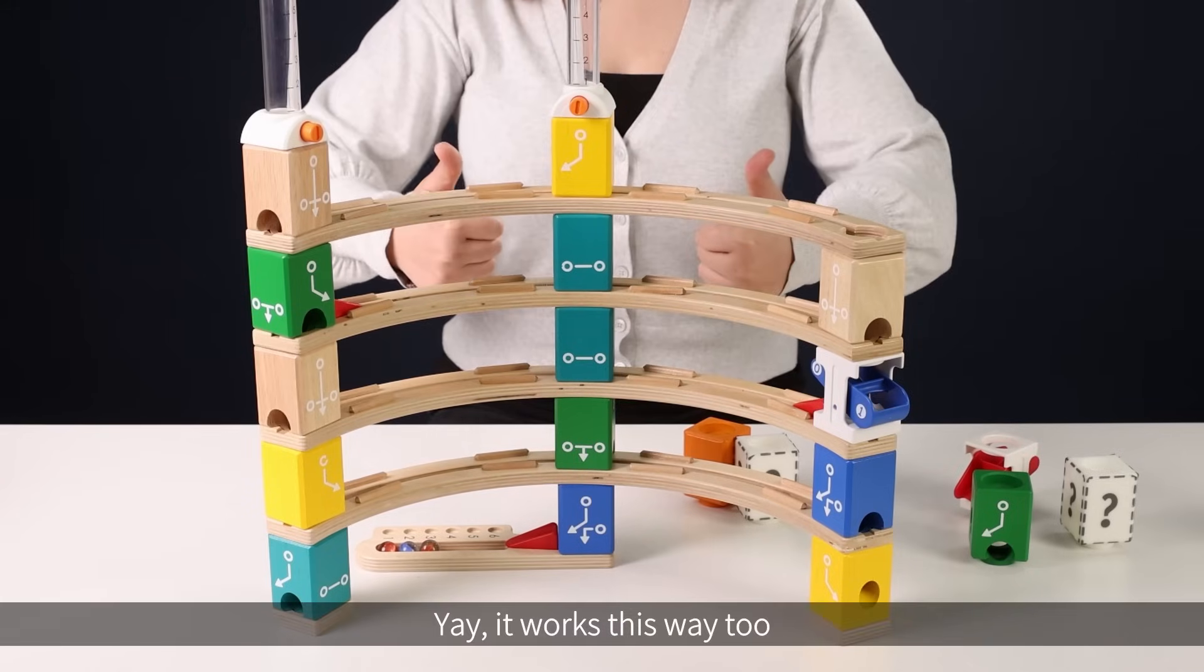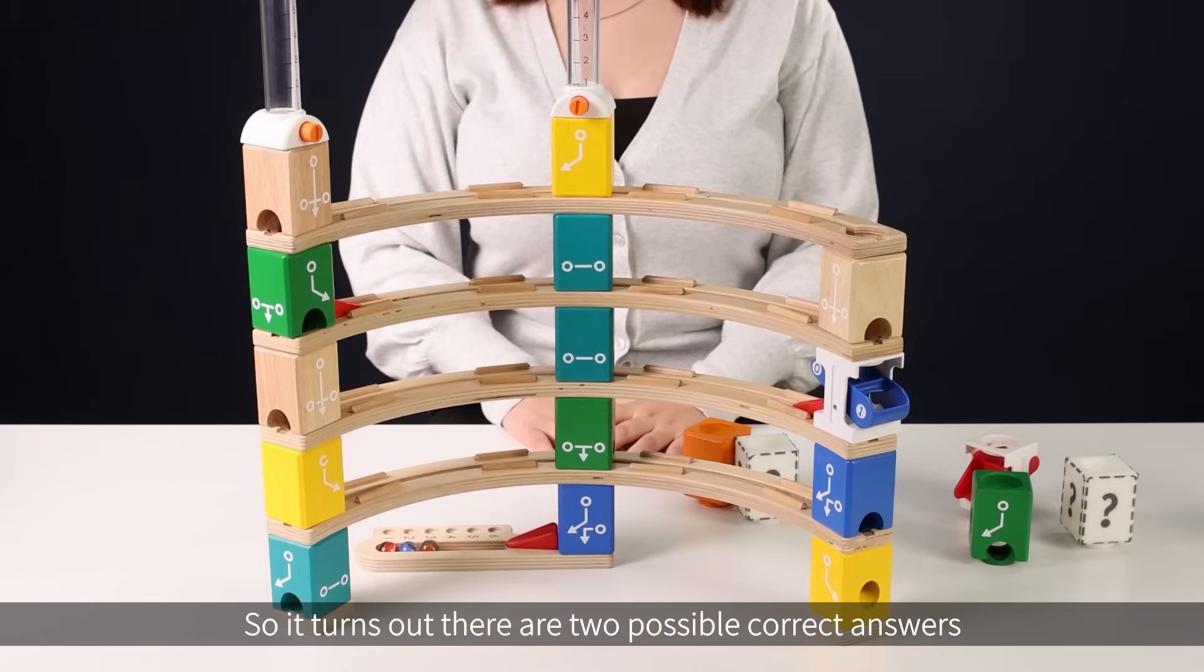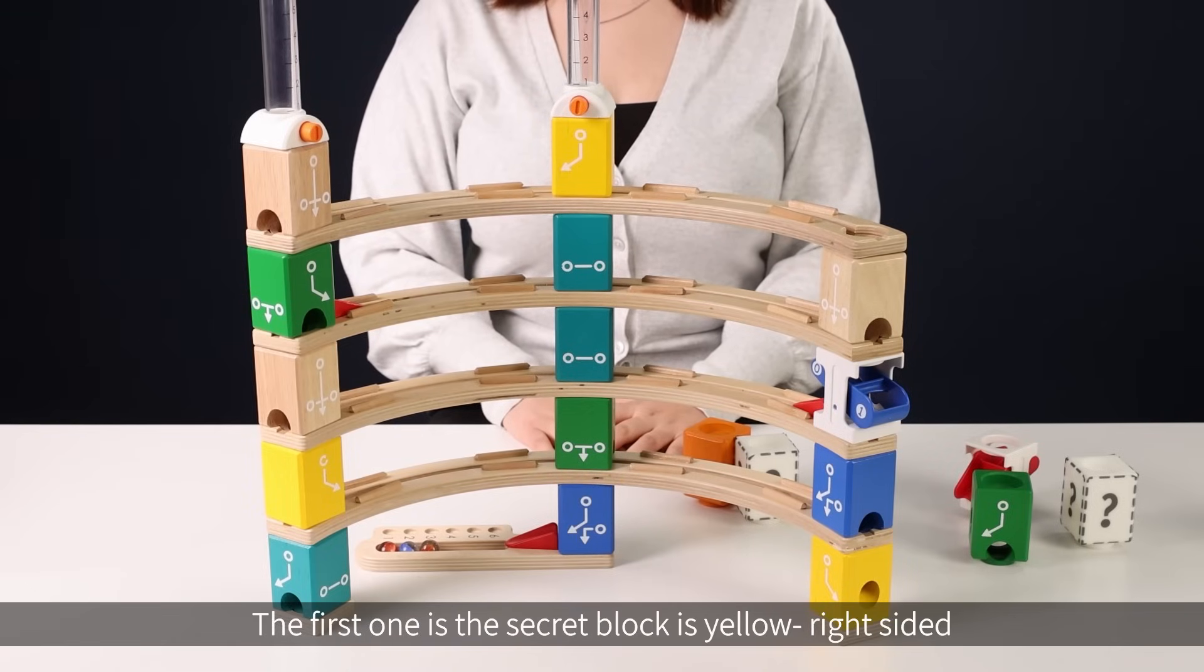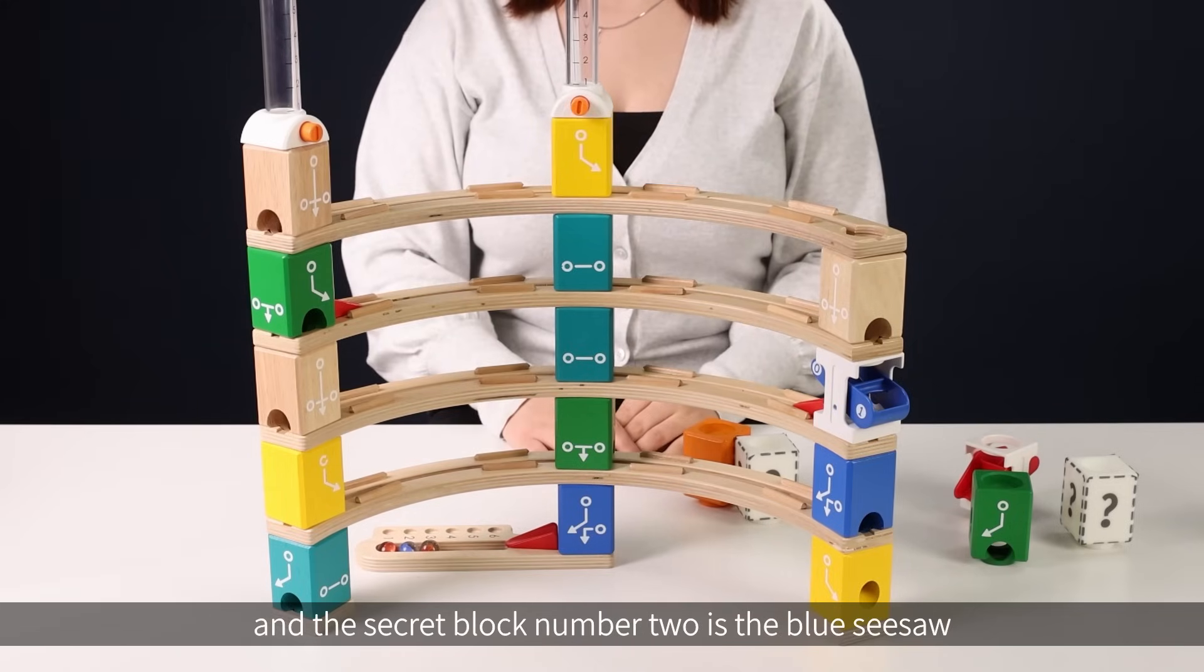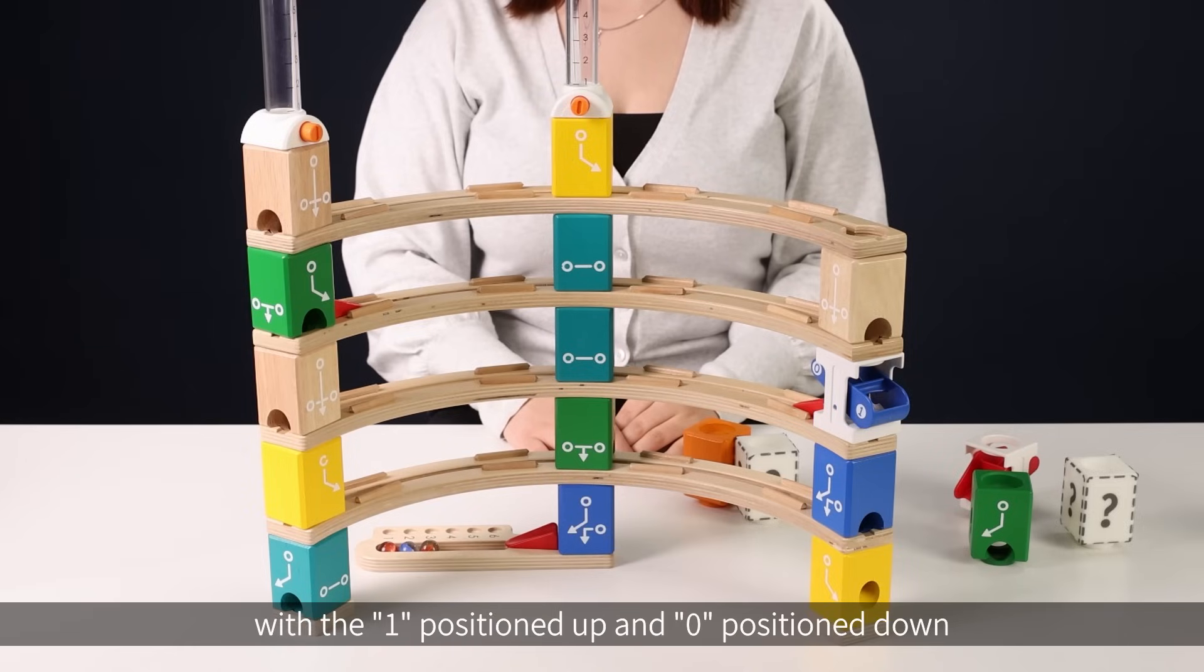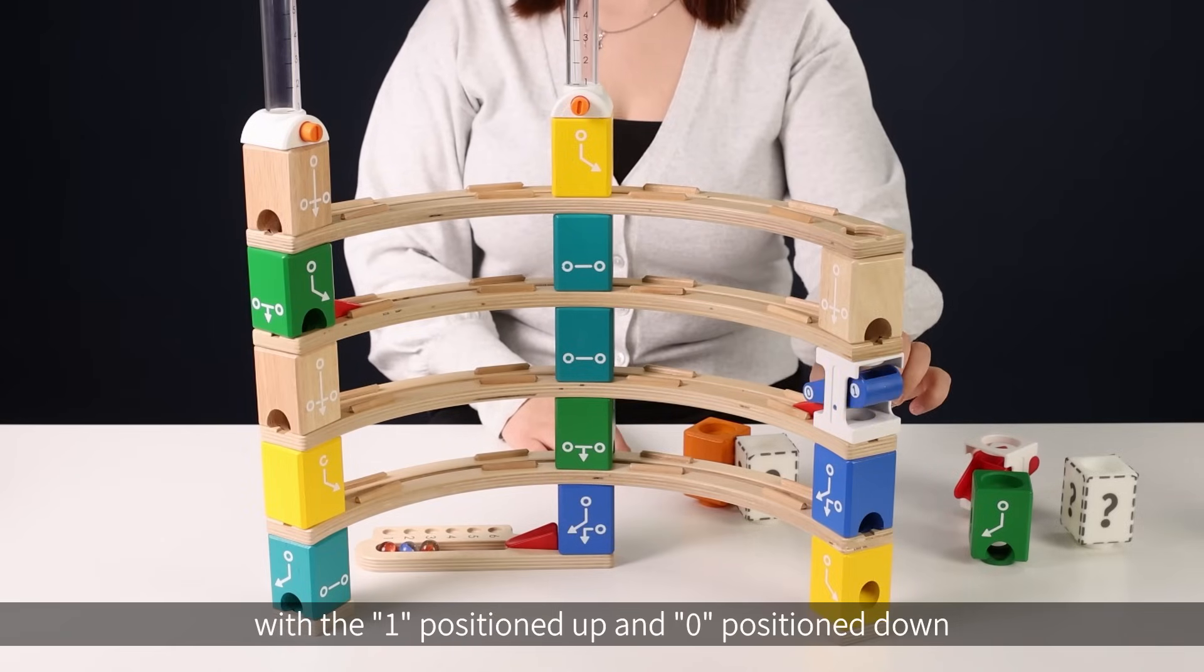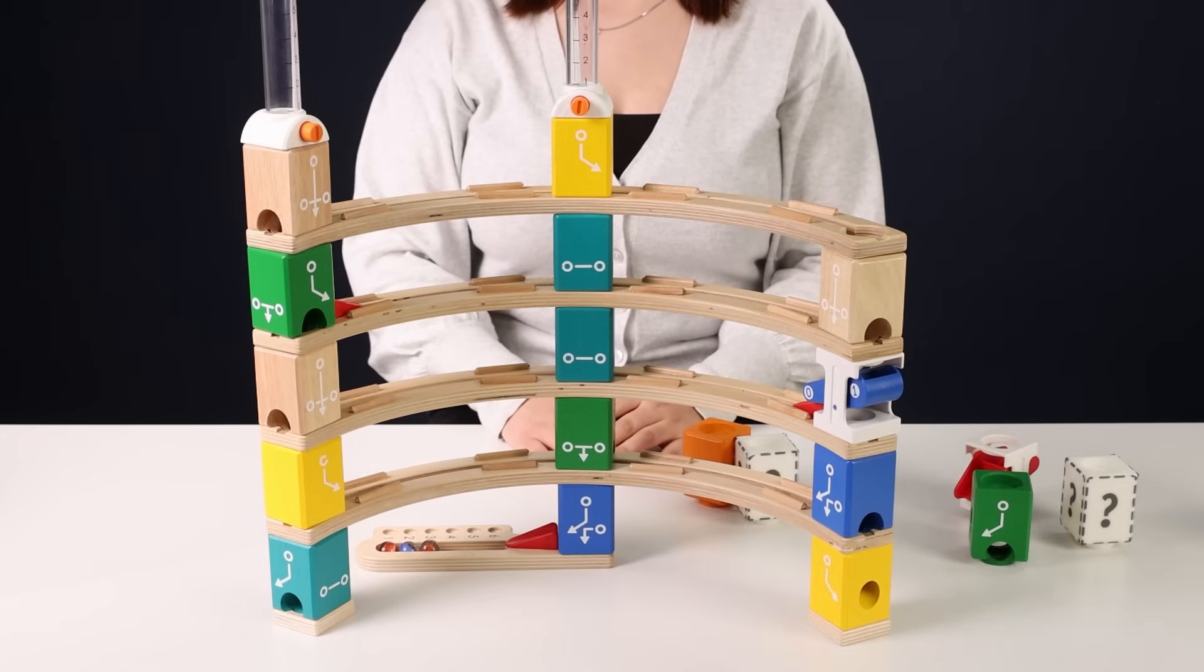Yay! It works this way too. So it turns out there are two possible correct answers. The first one is the secret block is yellow, right-sided, and the secret block number two is the blue seesaw with the one positioned up and zero positioned down.